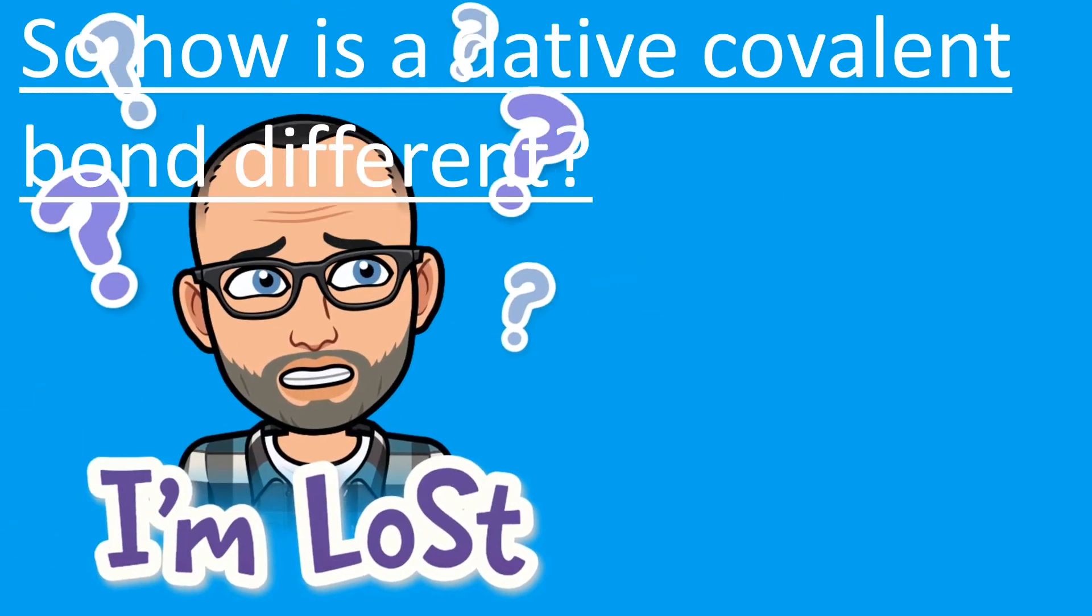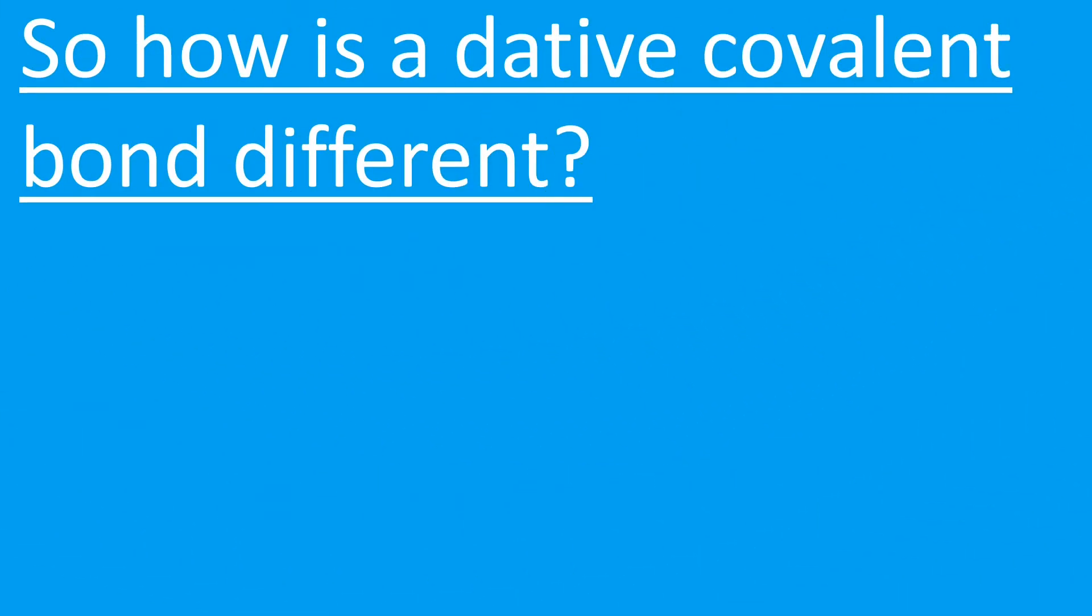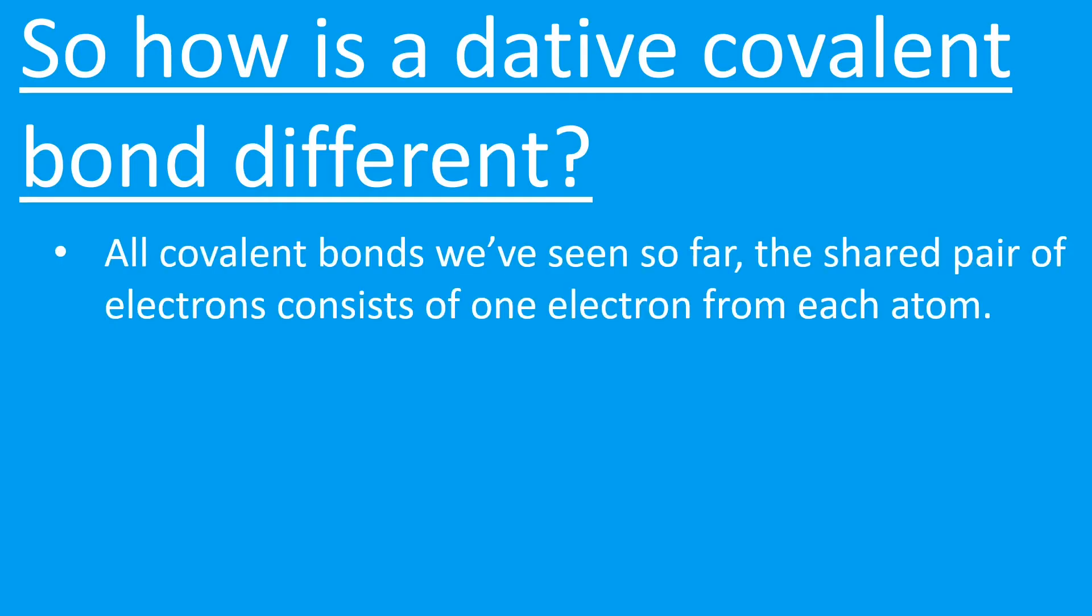So how is a dative covalent bond any different then? Remember it could also be called a coordinate bond—same thing. So far all the covalent bonds that we've seen have been a shared pair of electrons, one electron from each atom.